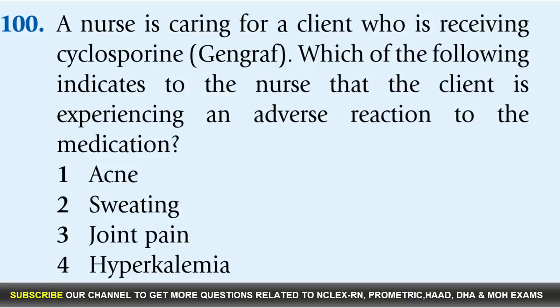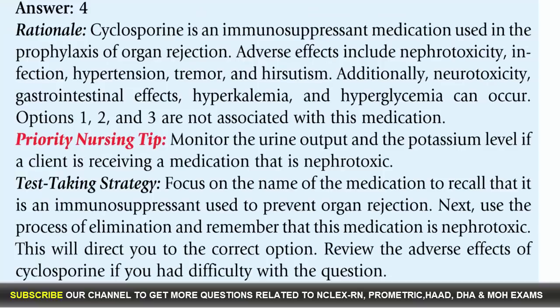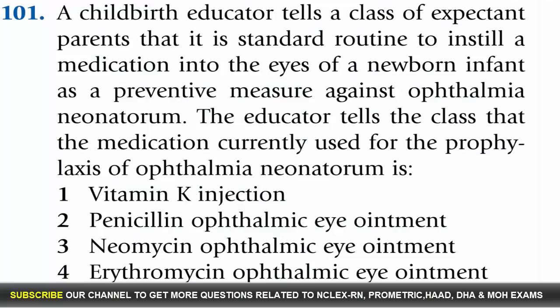Question 100: A nurse is caring for a client receiving cyclosporine. Which of the following indicates the client is experiencing an adverse reaction? Options: 1. Acne, 2. Sweating, 3. Joint pain, 4. Hypokalemia. Answer: 4. Rationale: Cyclosporine is an immunosuppressant used in prophylaxis of organ rejection. Adverse effects include nephrotoxicity, infection, hypertension, tremor, hirsutism, neurotoxicity, gastrointestinal effects, hyperkalemia, and hyperglycemia. Options 1, 2, and 3 are not associated with this medication.